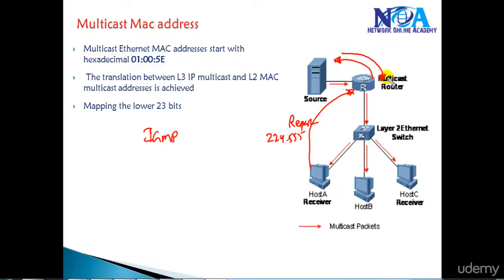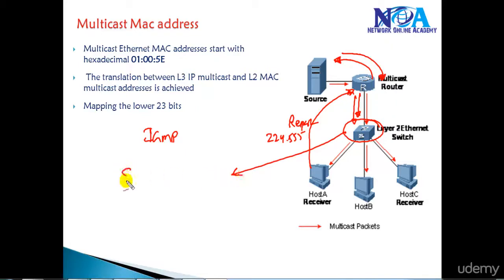The router then forwards the traffic to the particular switch. The question is how the switch is going to forward the traffic, because the source address will be the router address, and the destination address will always be the multicast address.